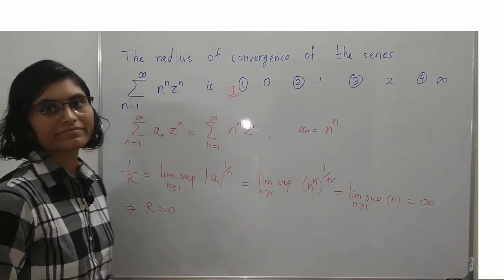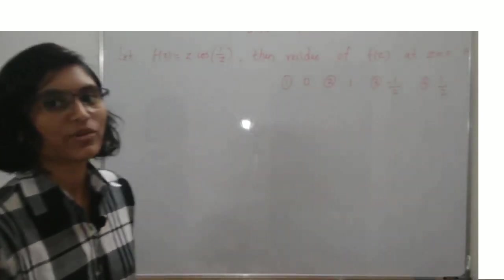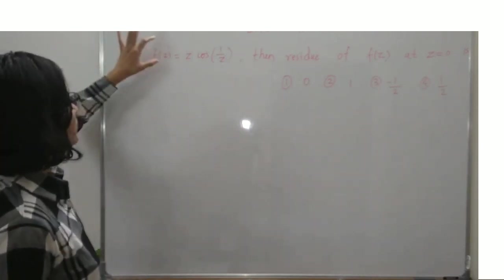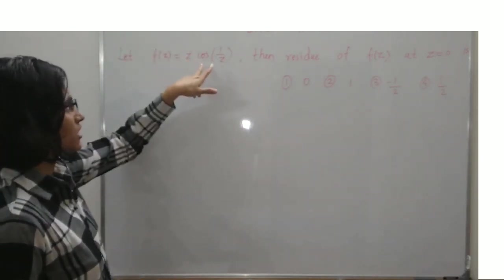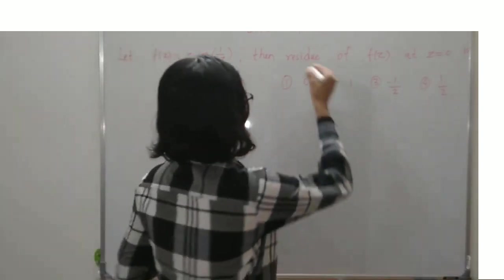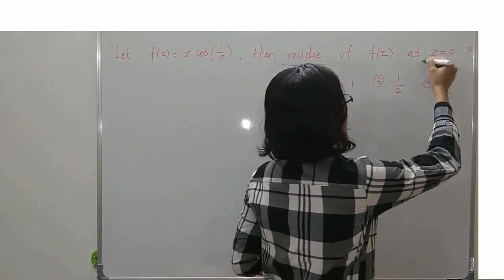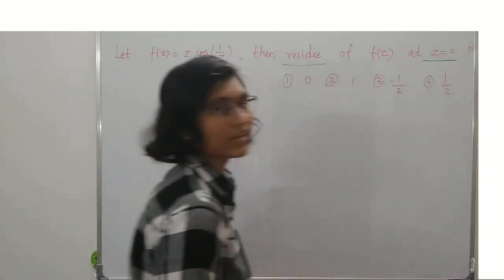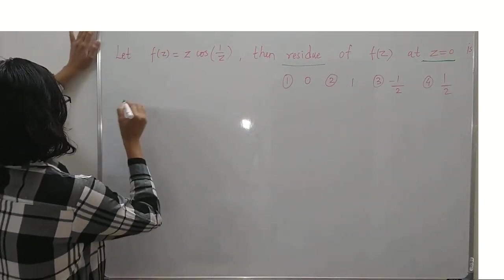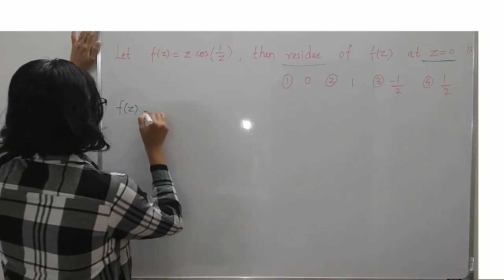The next question is about the residue of a function. We have f(z) = z · cos(1/z) and we have to find the residue of this function at z = 0. Note the result: suppose you have a function f(z) expanded in a Laurent series.